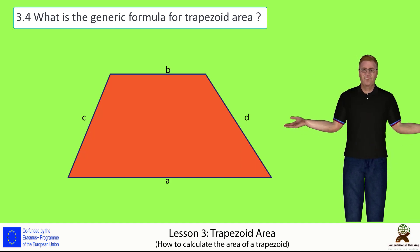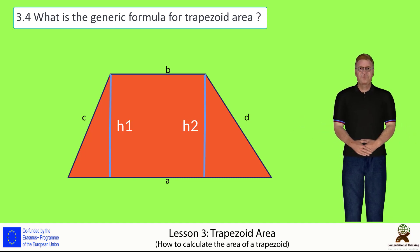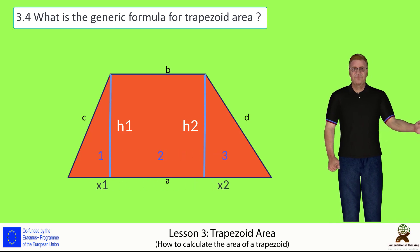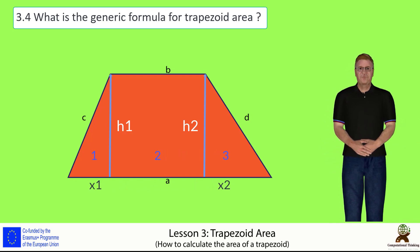We start the method by bringing the two heights from the edges of the smaller base to the bigger base. In our case, we have H1 and H2 from base B to base A. As we can see, the initial trapezoid shape is split into three separate shapes.